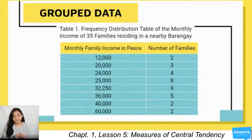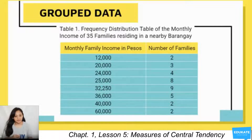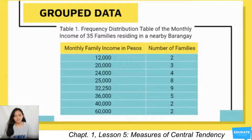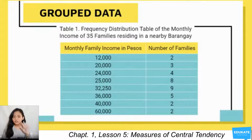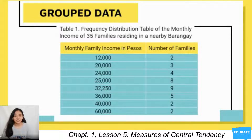Notice that the highest data value is 60,000 pesos while the lowest is 12,000 pesos. These highest and lowest values are commonly known as maximum and minimum respectively. These are summary measures of the data set and represent important location values in the distribution of data. However, these measures do not give a measure of location in the center of the distribution.